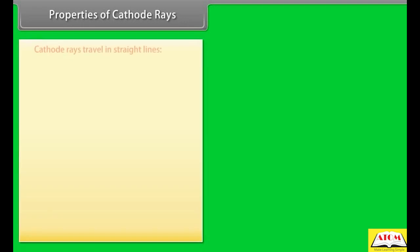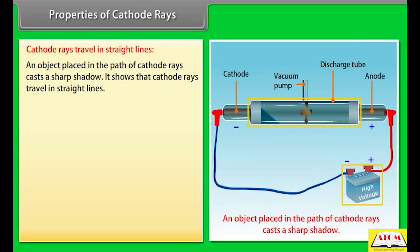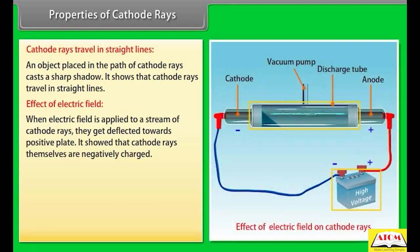Properties of cathode rays: Cathode rays travel in straight lines. An object placed in the path of cathode rays casts a sharp shadow, showing that cathode rays travel in a straight line.